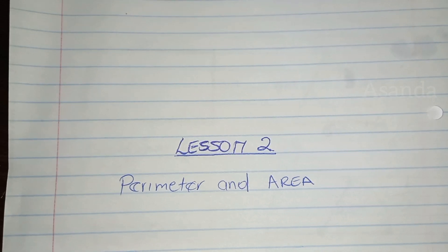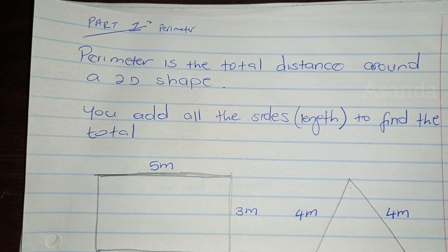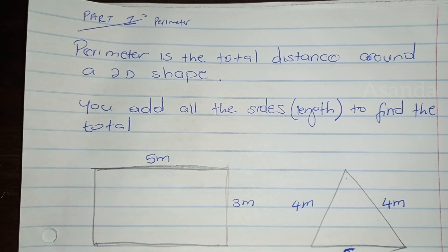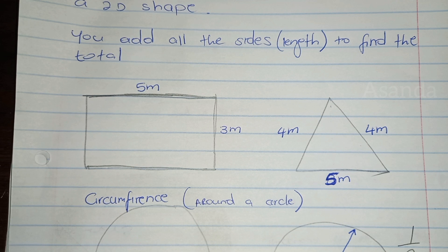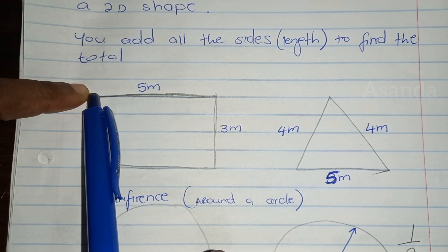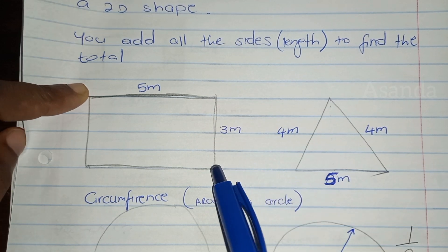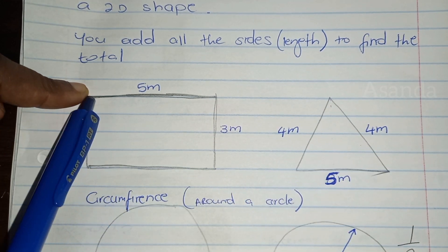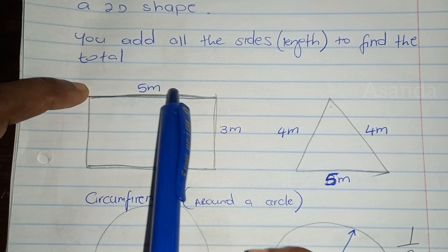Let's get started with perimeter. The first thing we need to know about perimeter is that it is the total distance around a 2D object. So if I'm looking at a 2D object like this one, which is a rectangle, the total distance around would be: starting from this corner — that distance plus this distance, plus the bottom part, plus the left side. That'll be the total distance around the shape.